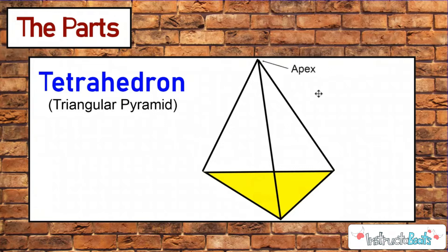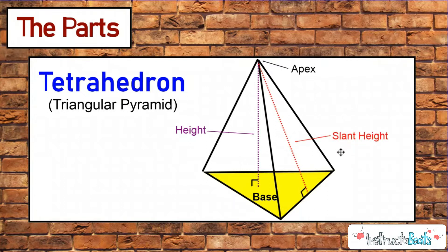Just like we had for our square and rectangular pyramids, we have our apex — this is where the sides or faces that are triangles are going to meet. We're going to have a base of our pyramid or tetrahedron, and that's going to be a triangle. We're obviously going to have a height, which is perpendicular to the base and runs from the apex all the way down. That should not be confused with the slant height, which starts at the apex and goes on a slant all the way down the face of our pyramid. The slant height will always be a bigger number than the height.